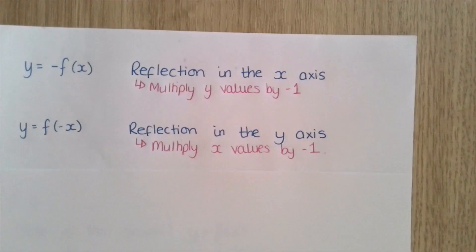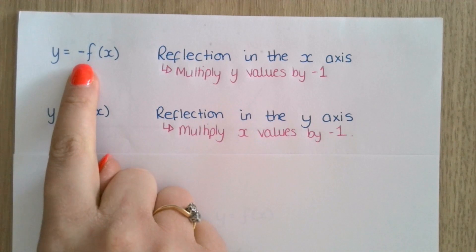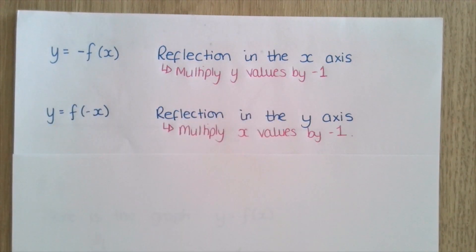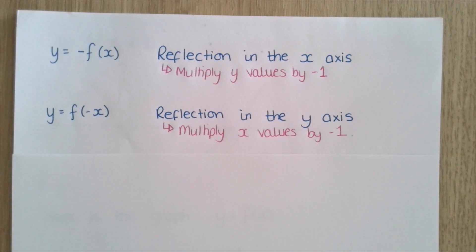The next transformation is y equals negative f of x. This is a reflection in the x axis, because what we need to do here is multiply our y values by negative 1. When you multiply a positive value by a negative value, it will become negative. Therefore, anything that was in a positive y quadrant will now become in the negative y quadrant.